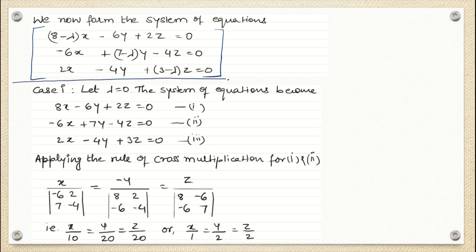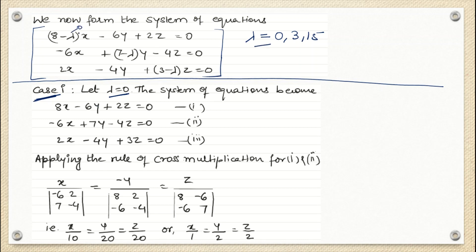The fourth step is to find the eigenvectors corresponding to each eigenvalue. We have three eigenvalues: 0, 3, and 15. Case 1: λ = 0. Substituting λ = 0 into the system gives: 8X - 6Y + 2Z = 0; -6X + 7Y - 4Z = 0; 2X - 4Y + 3Z = 0. To solve, we use the rule of cross multiplication on the first two equations.